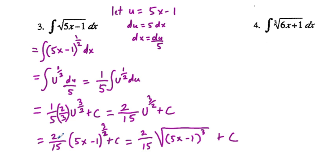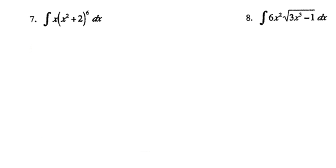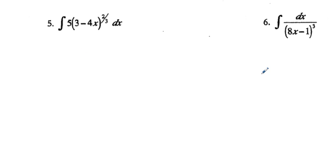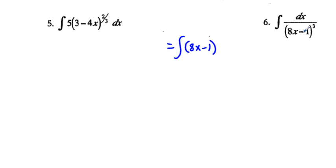Either of those two forms would be sufficient. Now let's go to problem 6. We have the integral of dx over the quantity (8x minus 1) cubed. We're going to do a rewrite: we bring (8x minus 1) to the negative third power up into the numerator, so we have the integral of (8x minus 1) to the negative third power dx.